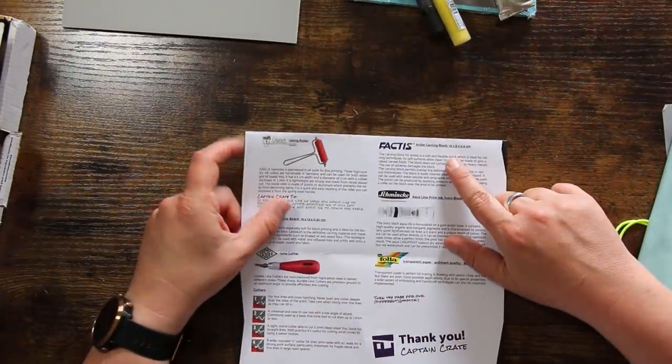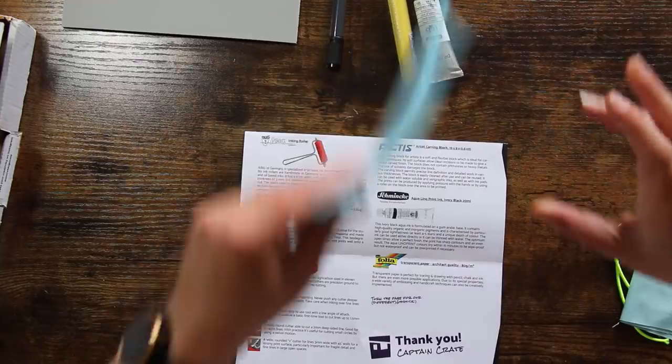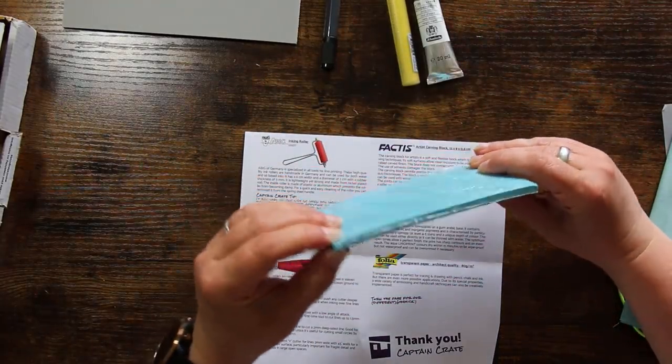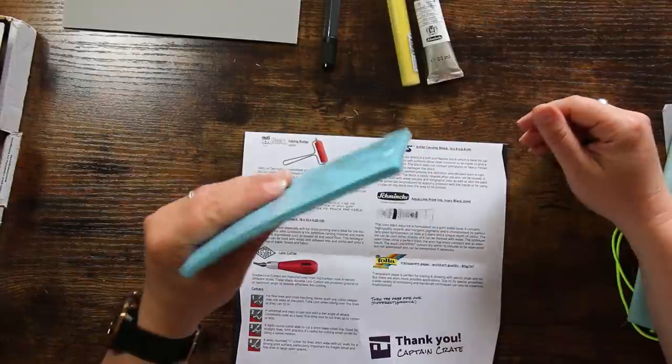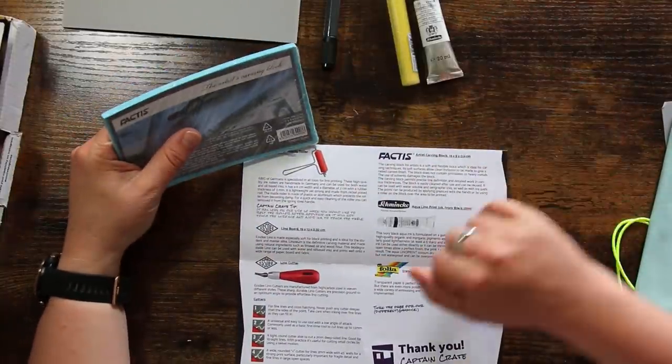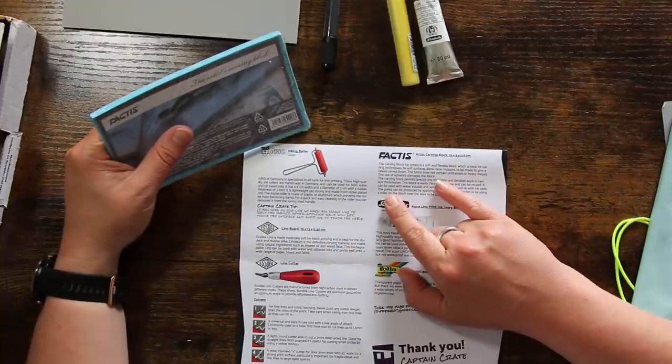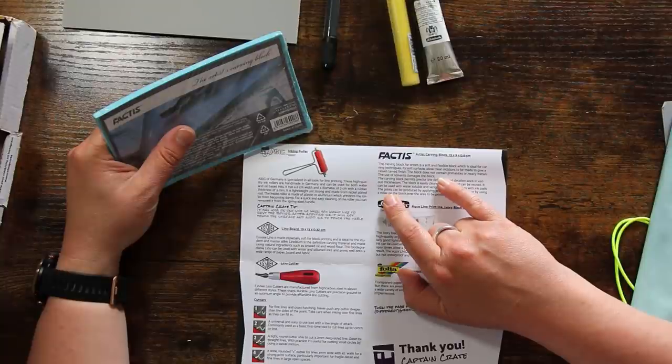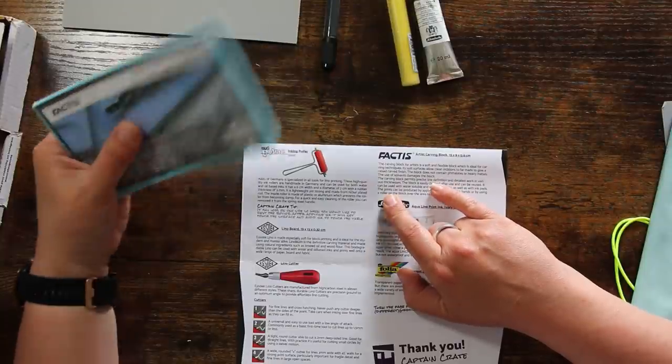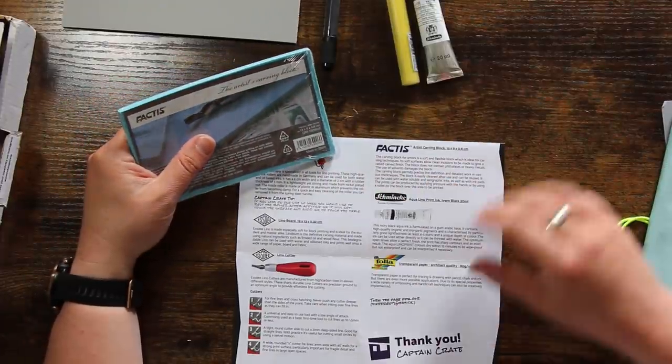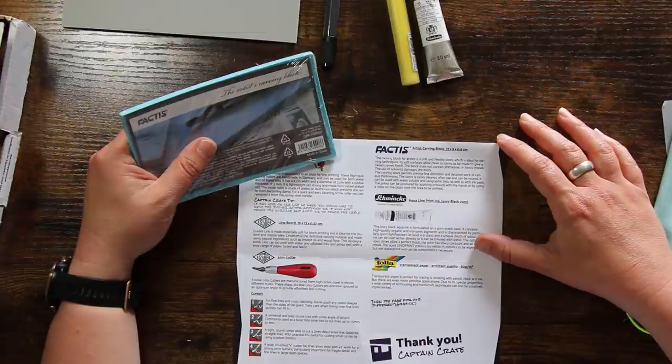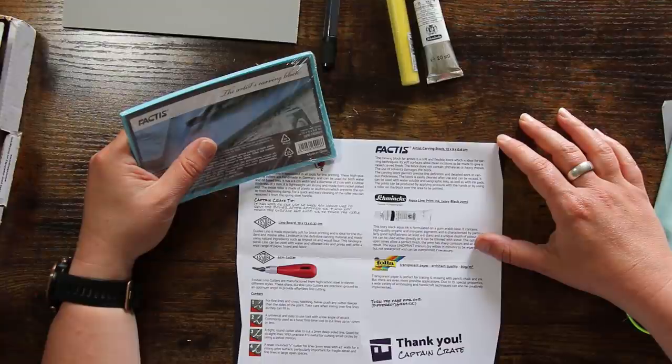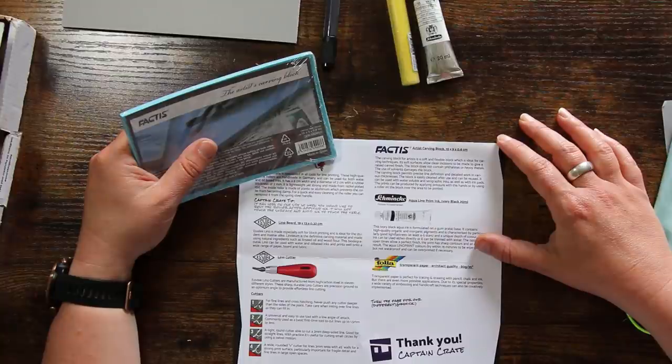Anyway they basically there's a little description here about the different types of cutters you get. There's like a v-shaped one and you get like a round cutter as well and that's good for straight lines. So that kind of thing's all very interesting but they've not provided any cutters so I can't really make much comment on that which is a shame. Let's move on and see what else we've got. The artist carving block. This is the rubbery substance here. It looks like a really big flat piece of blue tack. The carving block for artists is a soft flexible block which is ideal for carving techniques.